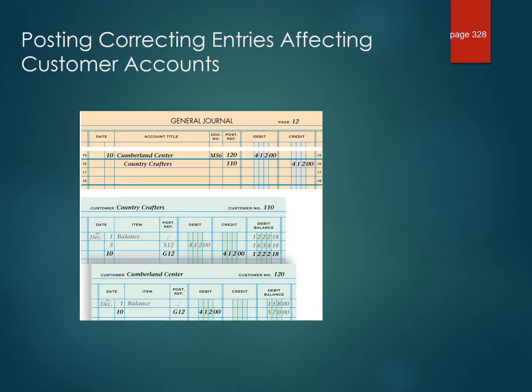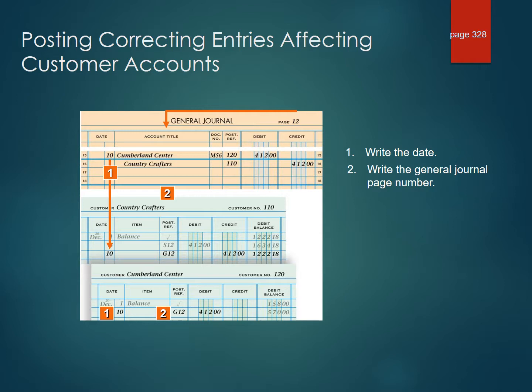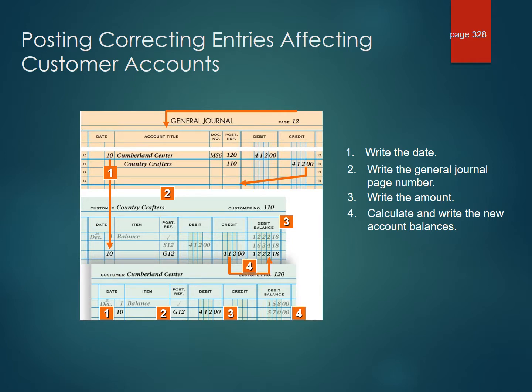Posting correcting entries affecting customer accounts. We will now take that transaction and write the date in our customer accounts. We will write the general journal page number, write the amounts into the correct customer accounts, and then calculate the due balances. Then we will go back to our general journal and in the post reference column record the appropriate customer numbers to show that these dollar amounts have been posted to the subsidiary ledgers.